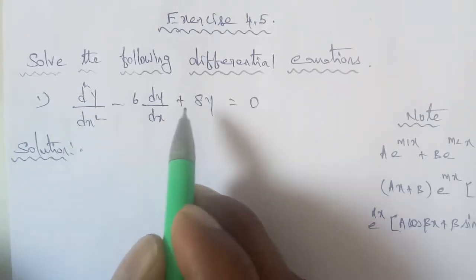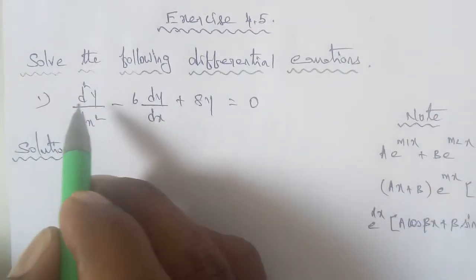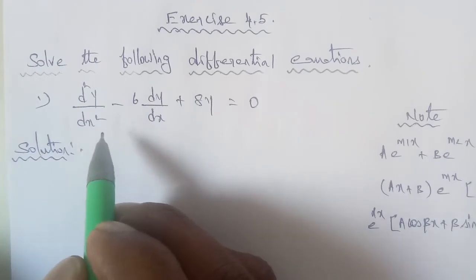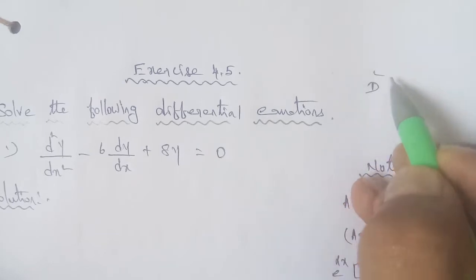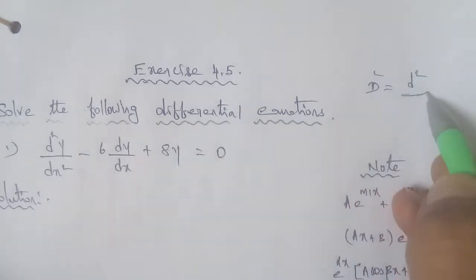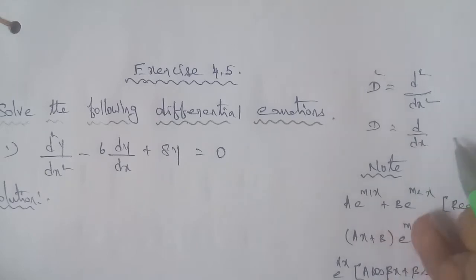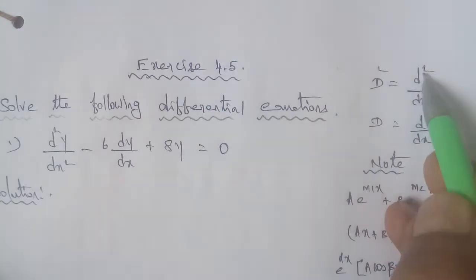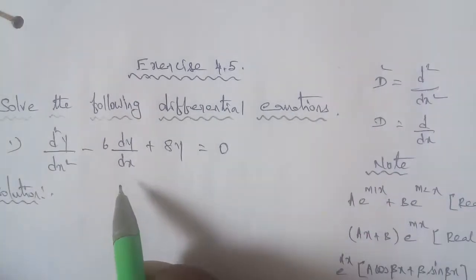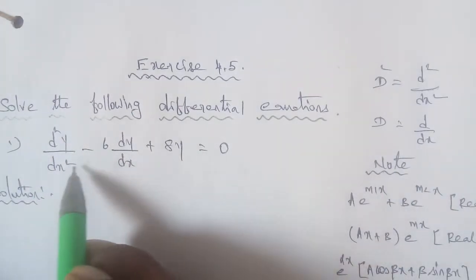In the second-order linear differential equation, the formula approach begins with operator notation. Capital D² is equal to d²/dx², and capital D is equal to d/dx. So we replace the derivative terms with capital D notation. D²y/dx² becomes capital D², and dy/dx becomes capital D, with y taken common.